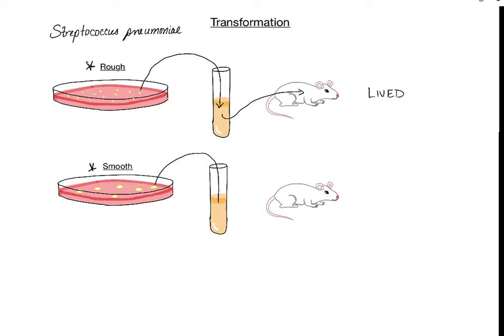When he did the same thing with the smooth colonies — picked a colony, created a broth of smooth Streptococcus pneumoniae, and injected it into the mice — the mice basically developed sepsis and died. So clearly the rough strains did not cause fatal disease, but the smooth strains did.